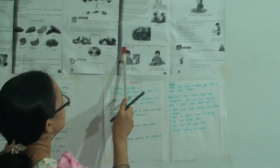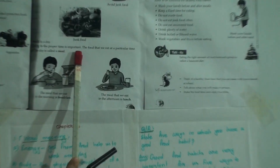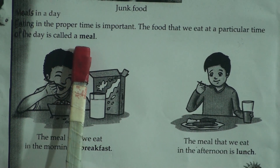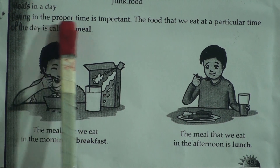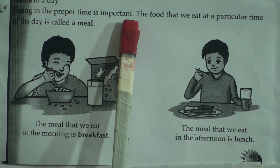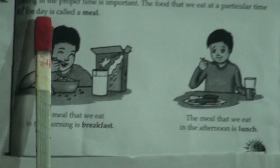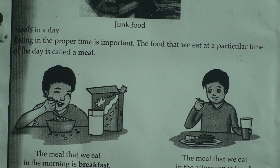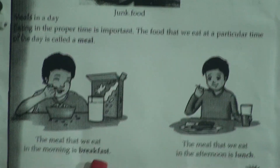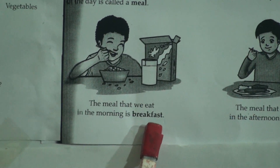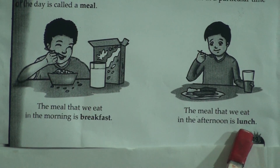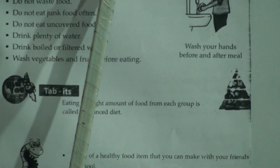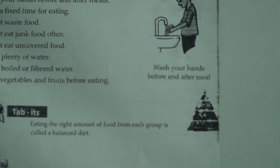Meals in a day — eating at the proper time is important. The food that we eat at a particular time of the day is called a meal. The meal that we eat in the morning is breakfast. The meal that we eat in the afternoon is called lunch. And the meal that we eat at night is called dinner.